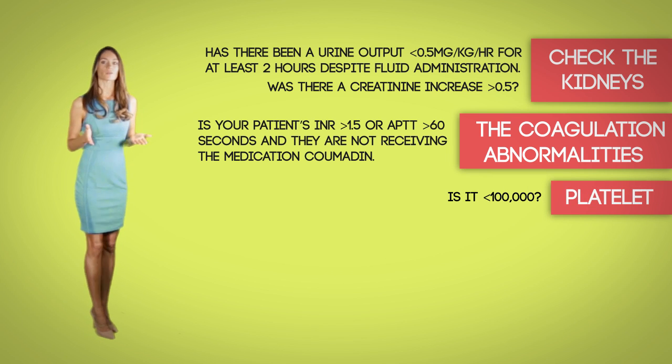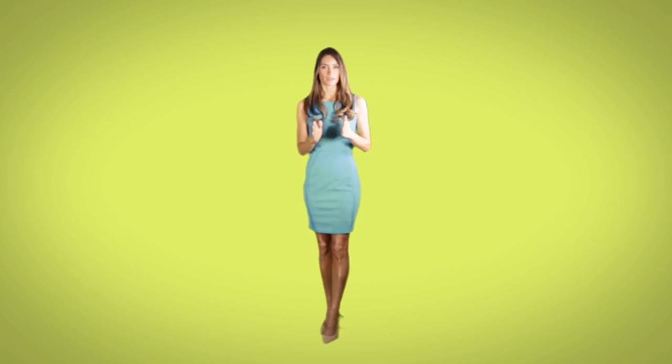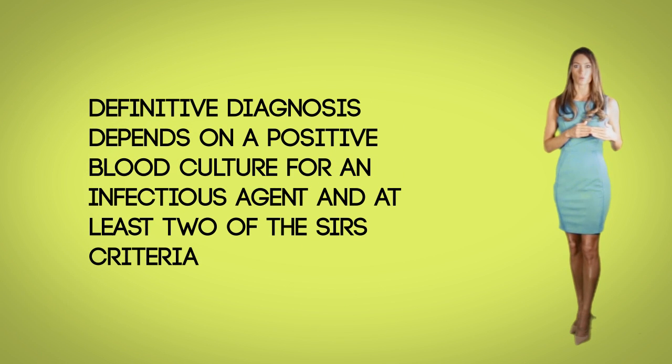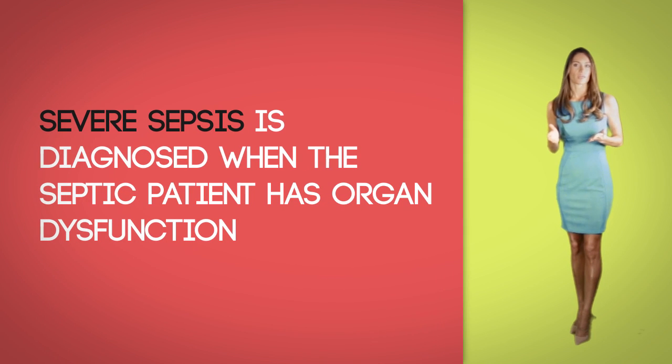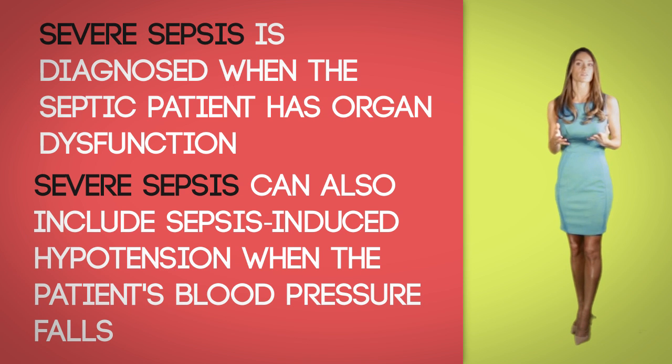Are the platelets less than 100,000 — normal starts at 150,000? Now check the liver: is the serum bilirubin greater than 4? In this section, if even one is positive, you must take it to the next step — which may mean calling the charge nurse, the sepsis coordinator, a rapid response, or a code sepsis, whichever is indicated by your facility. Definitive diagnosis depends on a positive blood culture for the infectious agent and at least two of the SIRS criteria. Severe sepsis is diagnosed when the septic patient has organ dysfunction — for example, low or no urine output or altered mental status. Severe sepsis can also include sepsis-induced hypotension, also termed septic shock, which is when the patient's blood pressure falls to dangerously low levels.